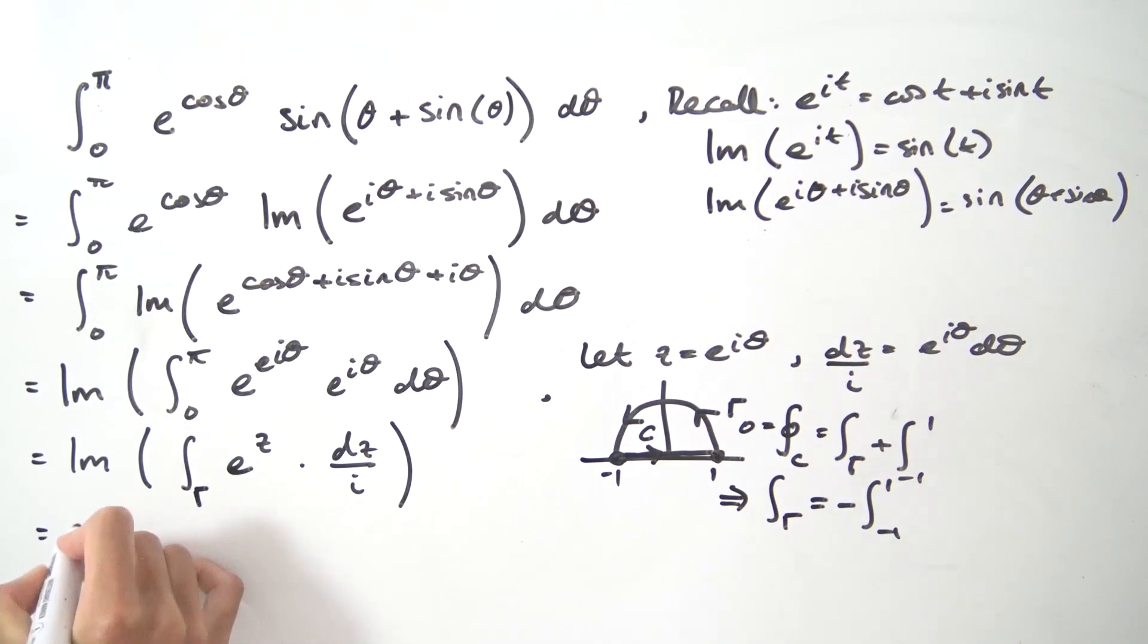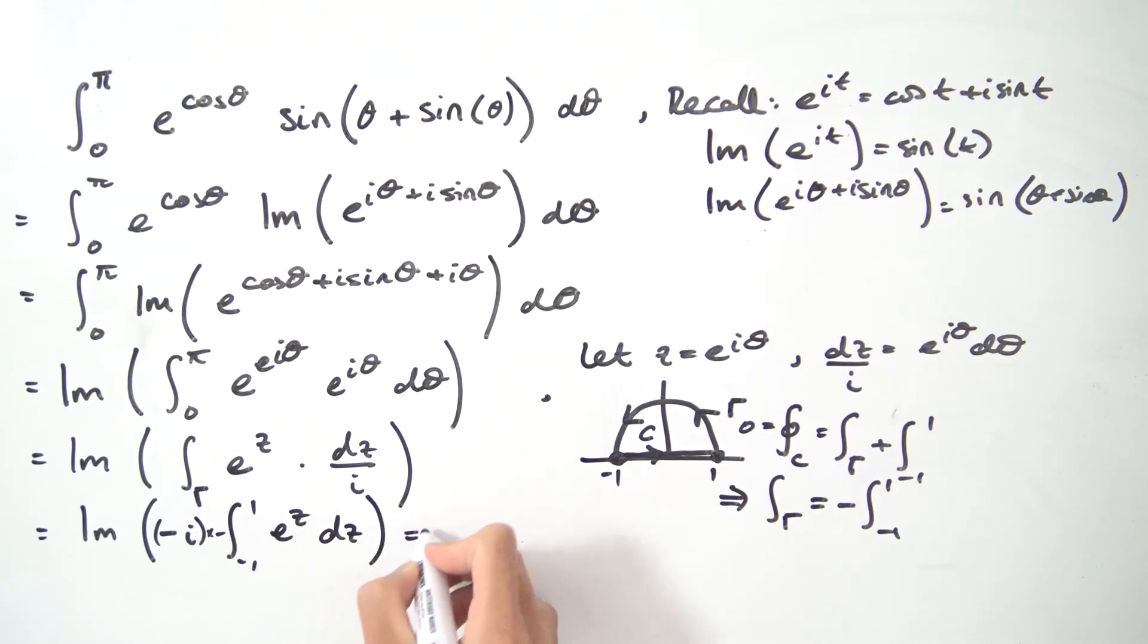So what this gives us finally is the imaginary part of, now what I'm going to do with this i as well is I'm going to flip it up to the numerator and that just becomes minus i, and then we have the negative integral. So we have minus i times negative integral from minus 1 to 1 of e to the z dz, and notice these negatives are going to cancel of course.